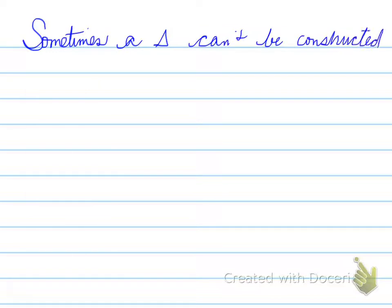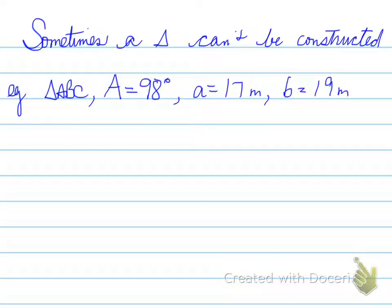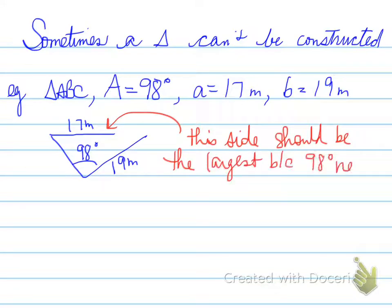Sometimes a triangle can't be constructed. For an example, if I give you a triangle and I give you angle A is equal to 98 degrees, side A is equal to 17 meters, and side B is equal to 19 meters, you set up the test. You test the opposite side to the angle against all the other information to see if it rules. You find out very quickly that it's not possible. It is impossible to draw that side because the opposite side, 98 degrees, is an obtuse angle. There can only be one obtuse angle in any triangle. 17 is opposite the 98.